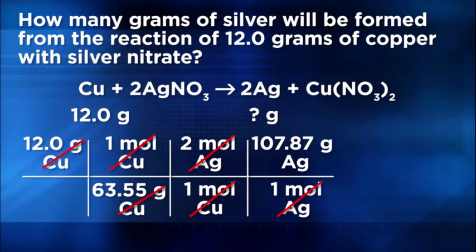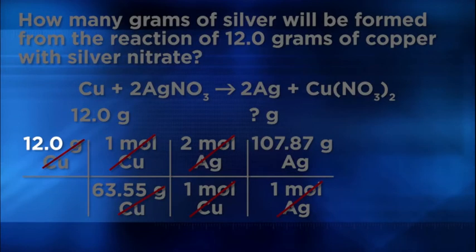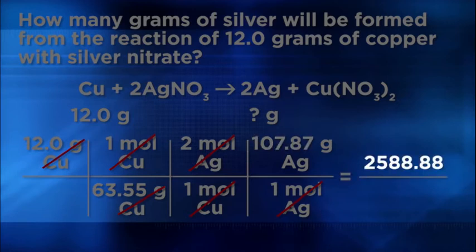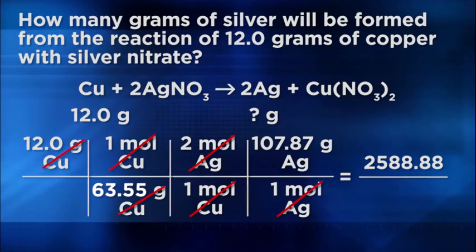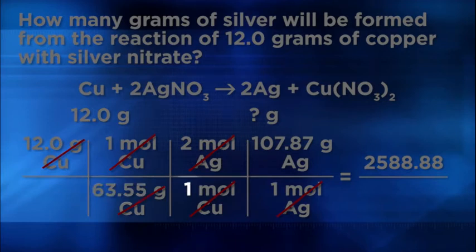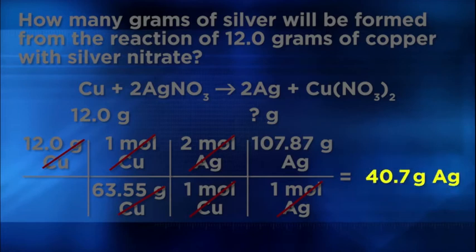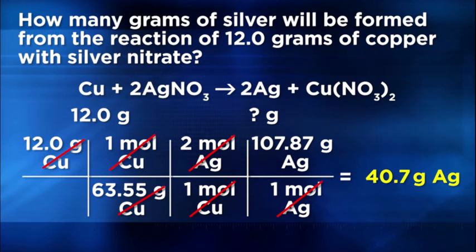All that's left is to multiply all the numbers across that are found in the numerator. 12.0 times 1 times 2 times 107.87 equals 2,588.88. Then we divide that by the product of 63.55 times 1 times 1, which is 63.55. Finally, divide 2,588.88 by 63.55 to get 40.7 grams. This is how we know that 40.7 grams of silver are made if 12.0 grams of copper are used, according to this reaction.